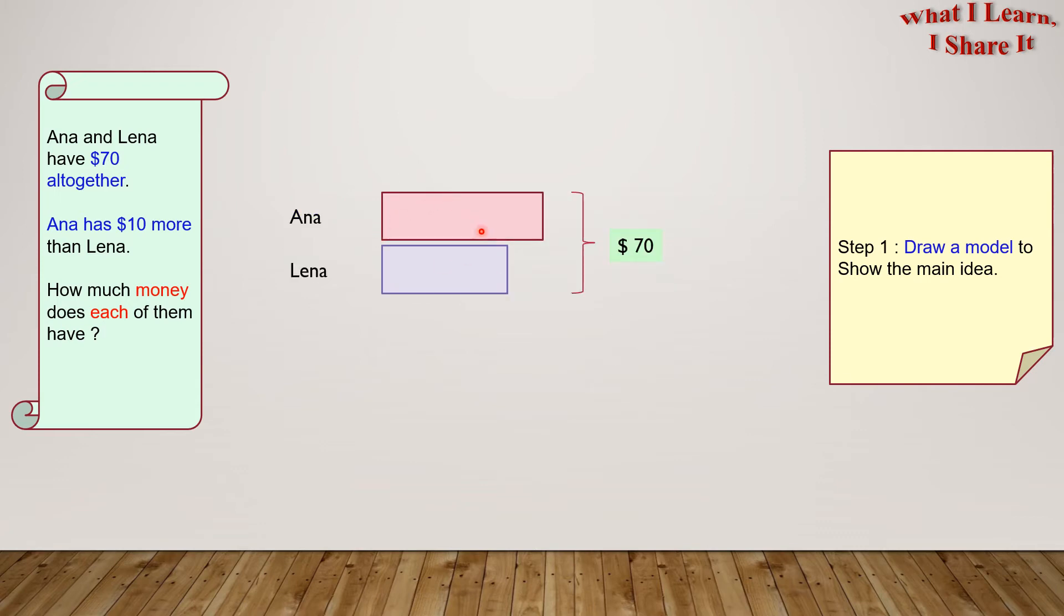Next, here I have aligned two rectangles, one below the other, because it gives a better comparison of the two. Since Anna has $10 more, let's say this part on the right represents $10. Suppose we remove this $10, then both Anna and Lena will have the same amount of money, right?